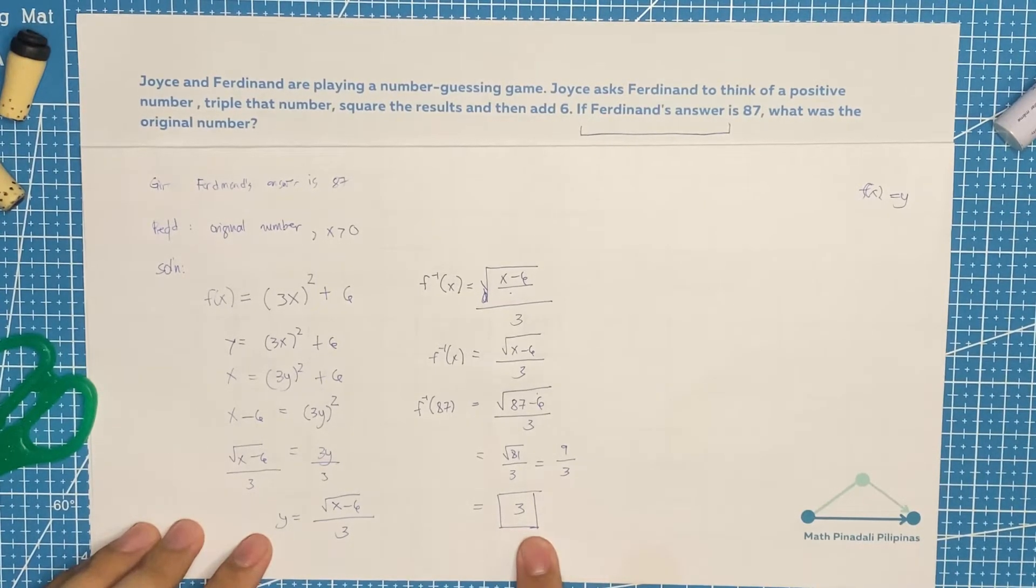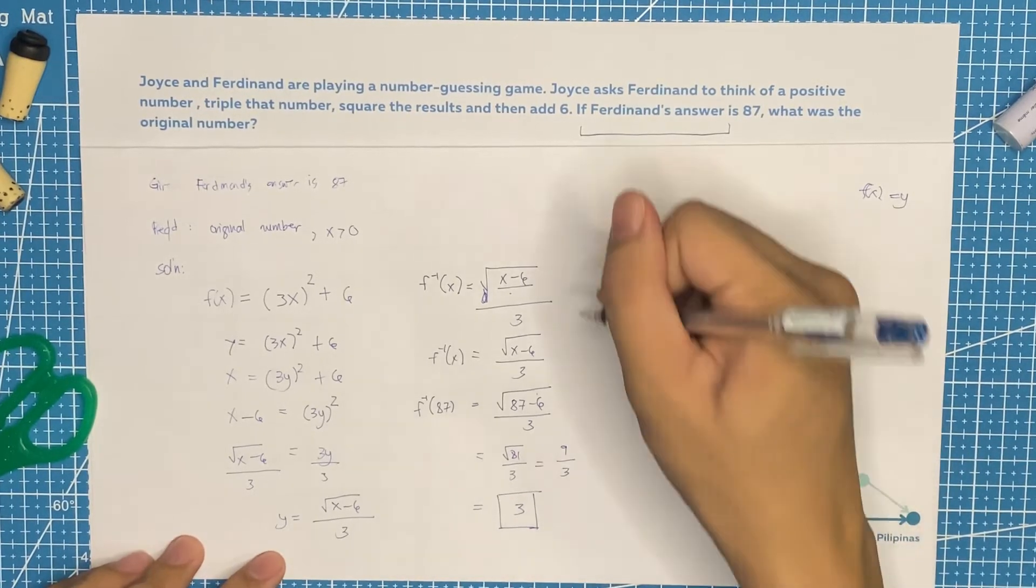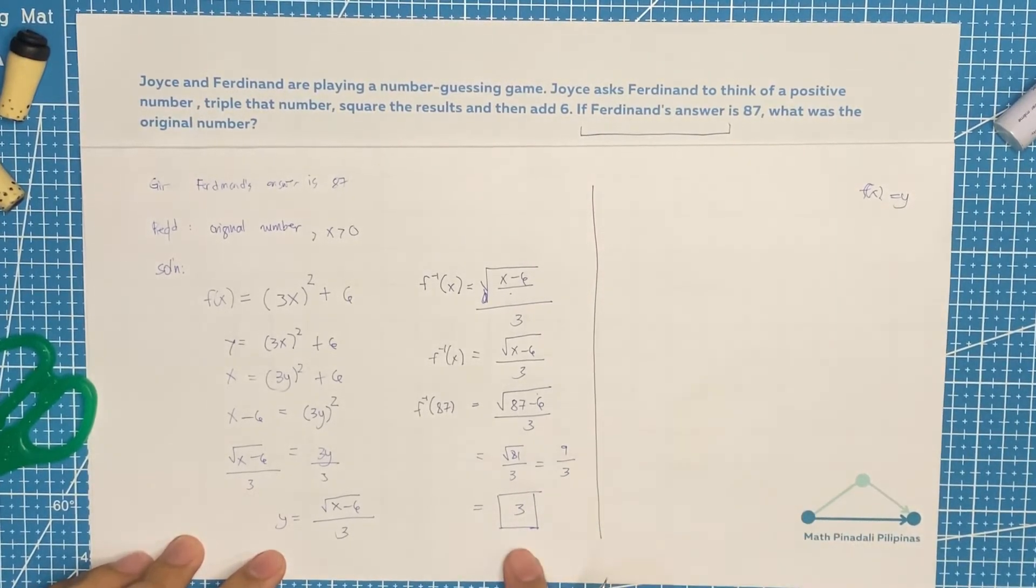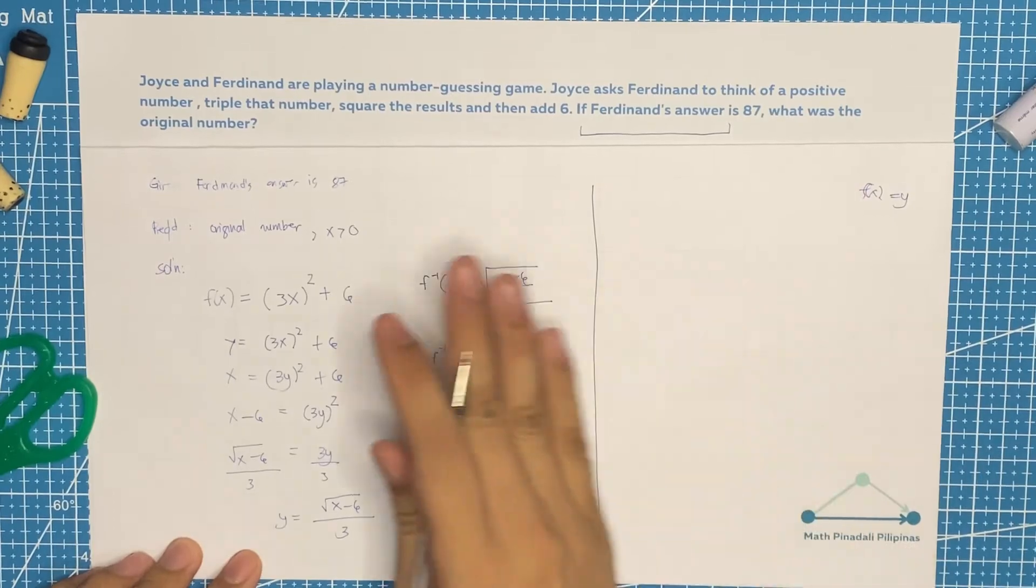So our original positive number is 3. Now, let's try to solve this one using the normal method without using the inverse function.